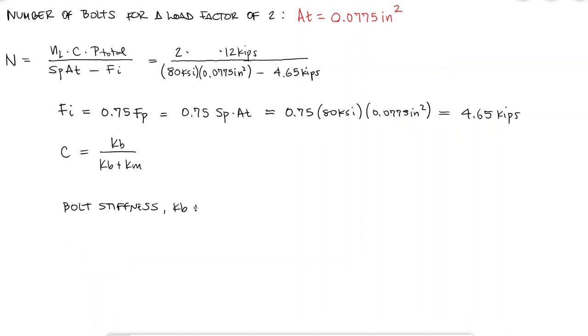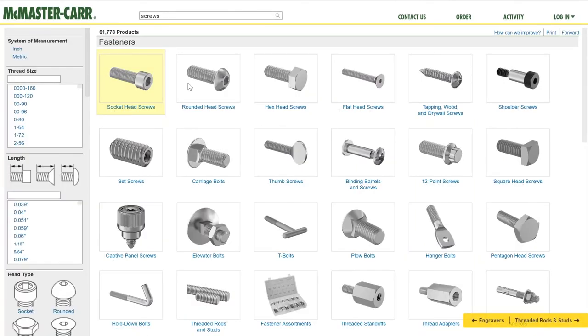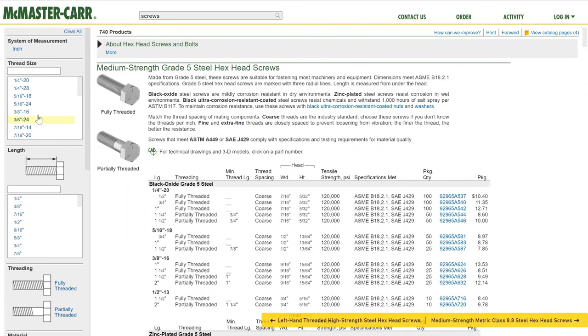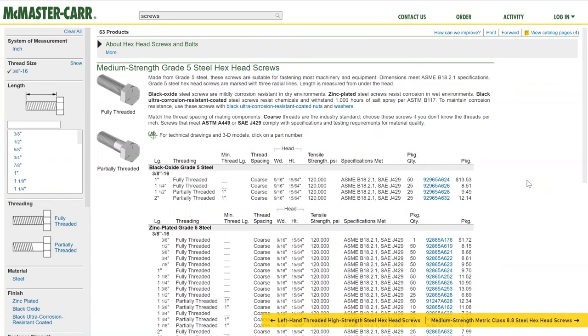From the expression we derived during the bolt stiffness and the member stiffness video, link below, we know we will need the length of the threaded portion of the grip and the length of the unthreaded portion of the grip, as well as the major diameter area of the fastener. If I look up my 3/8 of an inch 16 grade 5 steel bolt on McMaster, and since the thickness of both members, which is the grip L, is 1.5 inches, 3/4 of an inch from each, I'm gonna assume that a length of 2 inches is enough.